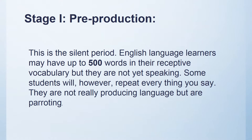The first stage is called pre-production. We refer to this as the silent period. At this stage, English language learners may have up to 500 words in their receptive vocabulary — meaning they can understand up to 500 words auditorially, but they're not speaking yet. It's helpful to liken this stage to a child who is not yet speaking but understands a lot of what is being spoken, and won't speak until they've made a leap towards production.